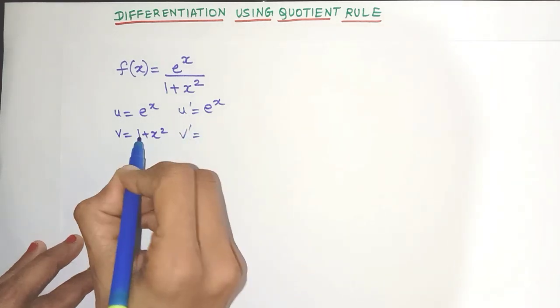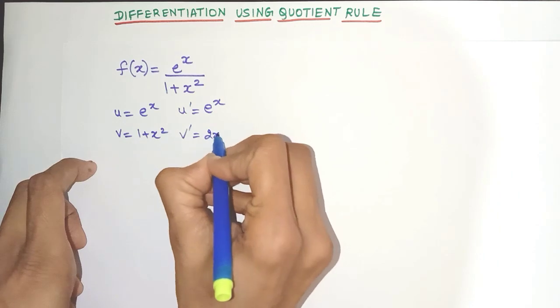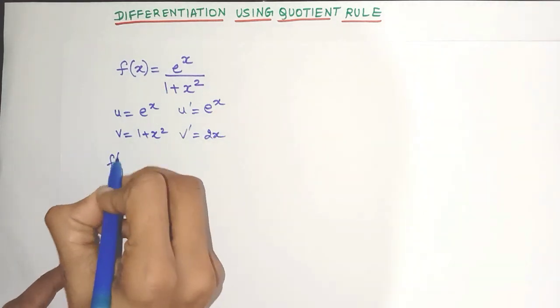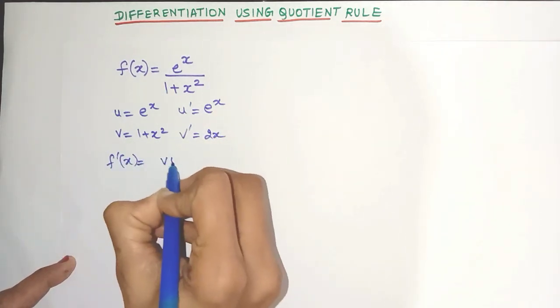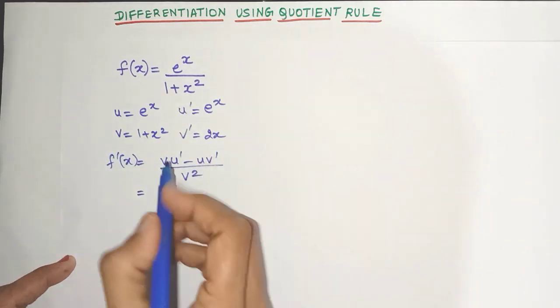Derivative of v. So derivative of 1 is anyway 0. Derivative of x square is 2x. That's it friends. Now let's write the quotient rule formula. Step by step let's do it. Now let's substitute.